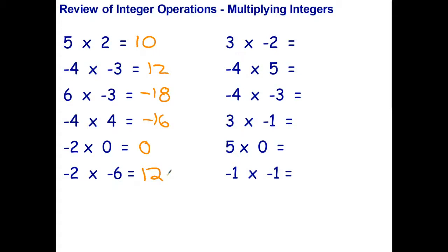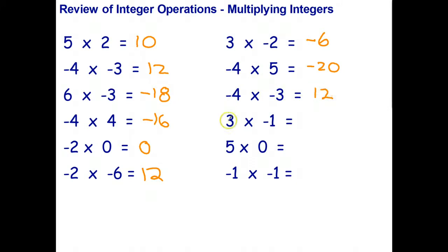Try the six on the right, pause the video, and once you're finished restart for a quick check. Three times negative two: positive times a negative is negative, so negative six. Signs are different so the answers are negative — making that negative twenty. Signs are the same — negative times a negative — answer is always positive, so positive twelve. Signs are different, answer is negative. Anything times zero is always zero. Negative one times negative one — a negative times a negative is always a positive.